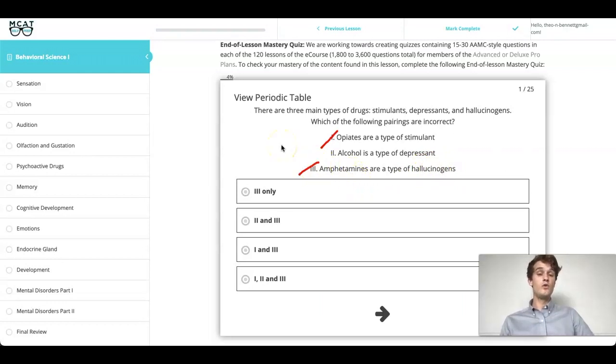And so, knowing that only answer choice 2 is correct, we can narrow down our answer choices here. Again, remember that this question says which of the following is incorrect. And so, the answer is going to be 1 and 3.